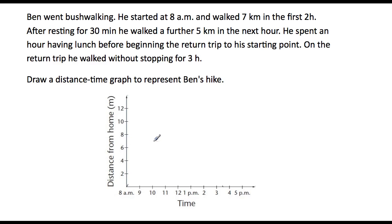That's our first key point, so we'll get a line and join the point from here to there. Now it says after resting for 30 minutes — if he's resting, he's not going anywhere. He did that for 30 minutes, so from 10 o'clock that takes us to 10:30, which is about here. We need a horizontal line, so let's go horizontal from here across to here.